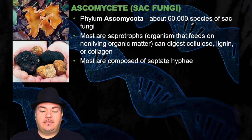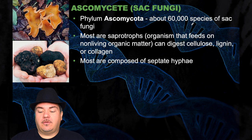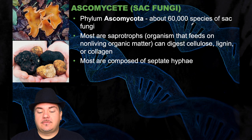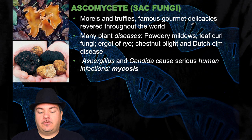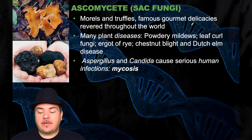The next phylum is the ascomycetes, also known as sac fungi. There are about 60,000 species. Most are saprotrophic, which means they're organisms that feed on non-living organic matter, and they can digest cellulose, lignin, and collagen. Most are composed of septate hyphae. Morels and truffles are famous gourmet delicacies revered throughout the world. Many plant diseases, like powdery mildews, leaf curl fungi, or ergot of rye, are in this group. And some of these fungi cause serious human infections called mycosis.